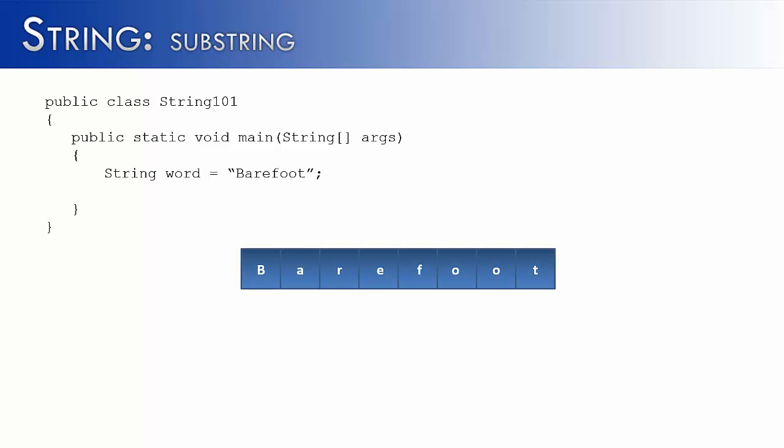Strings can be divided into their individual characters, and let's see a visualization of that. It would look something like this. Barefoot, which is the string word, is divided into its individual characters. And we can access these characters through something called its index. Every character has an index associated with it. So the a is at 1, the e is at 3, the f is at 4, so on and so forth.